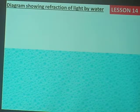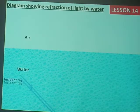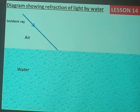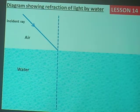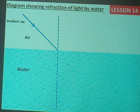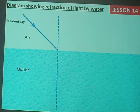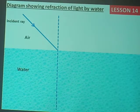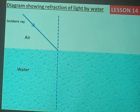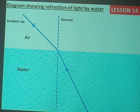In this case, we have water with air above it. The incident ray is moving from air and entering through water. Air is less dense and water is denser — so the light ray is going to bend towards the normal. Who can complete the diagram? It is going to bend towards the normal.